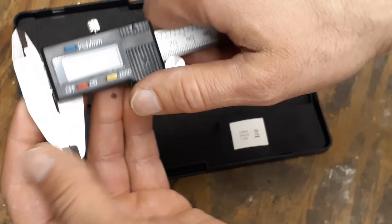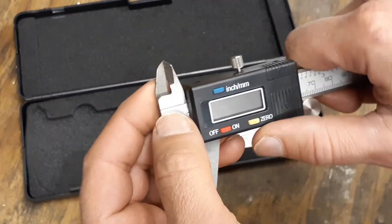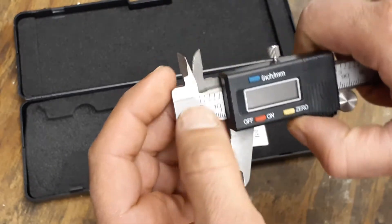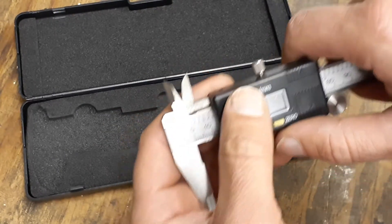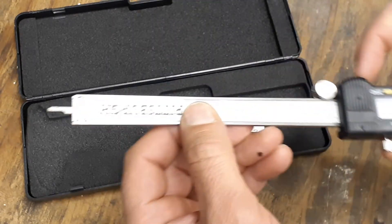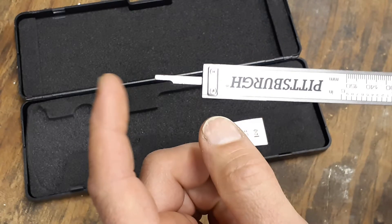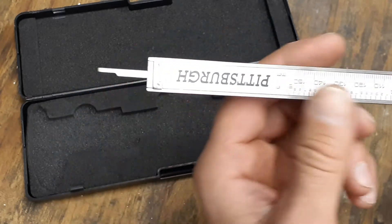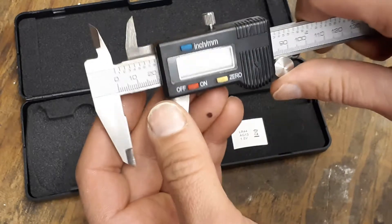And then here's your outside jaws, and these here are your inside jaws you use to measure the inside of something. And then on the back of this, as you slide it down coming out the bottom here, this is your depth gauge. You can measure the depth of something.